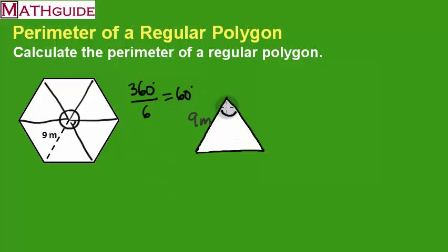So that means I know that one of those little angles, that central angle right there at the top is a 60 degree angle. We also know that these radii are congruent. In other words, this radius is the same as this radius.